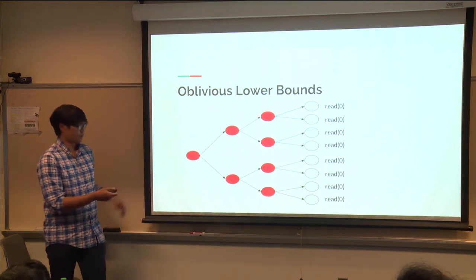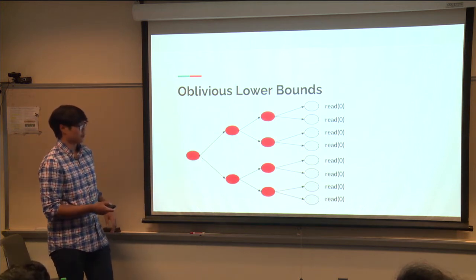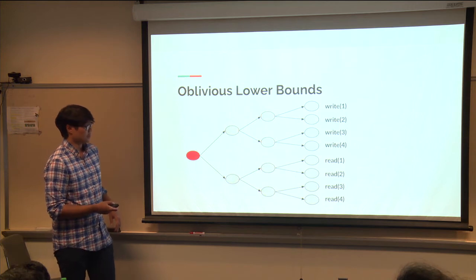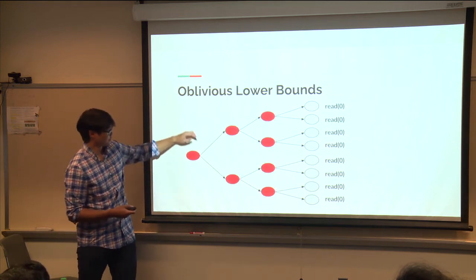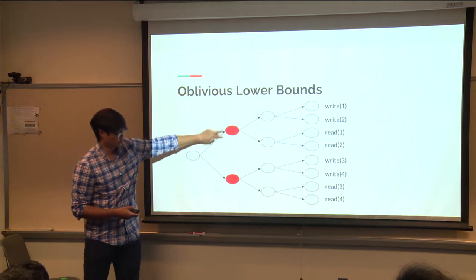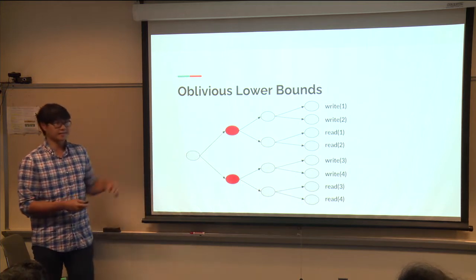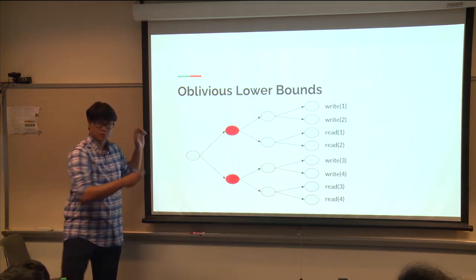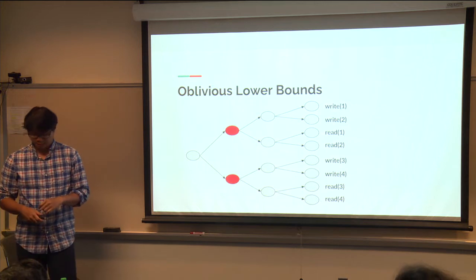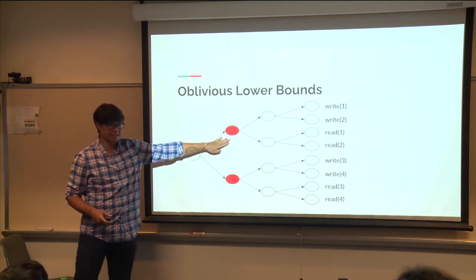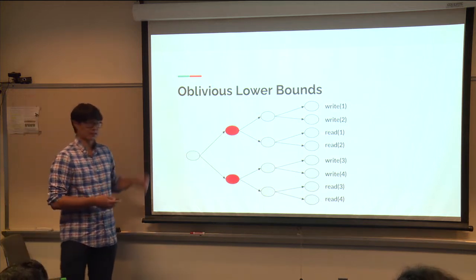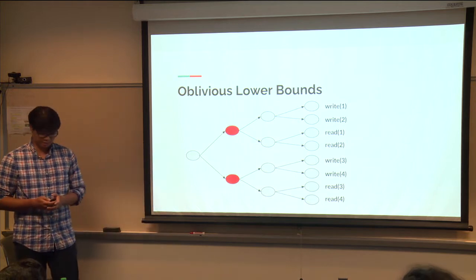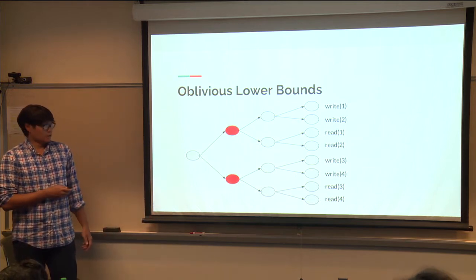The logarithmic lower bound follows because: four probes must be assigned here, two probes here, and so forth. Since cell probes are partitioned uniquely to each internal node, the sum becomes n log n total for n operations.